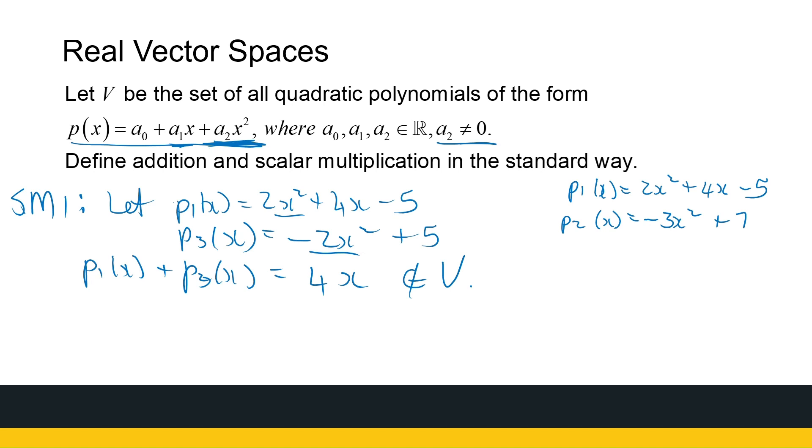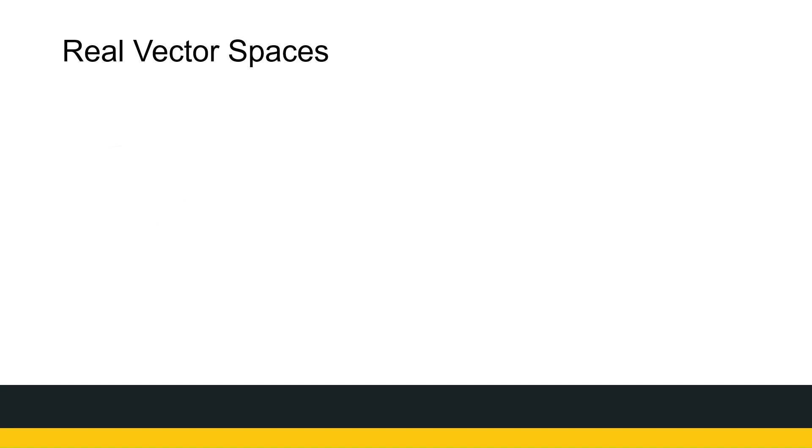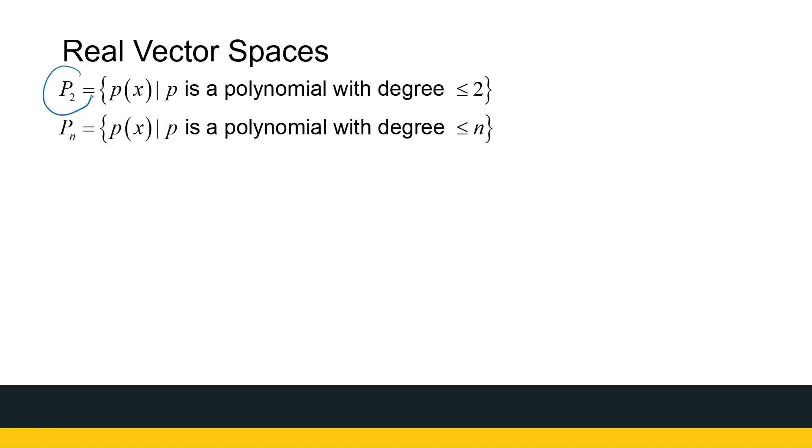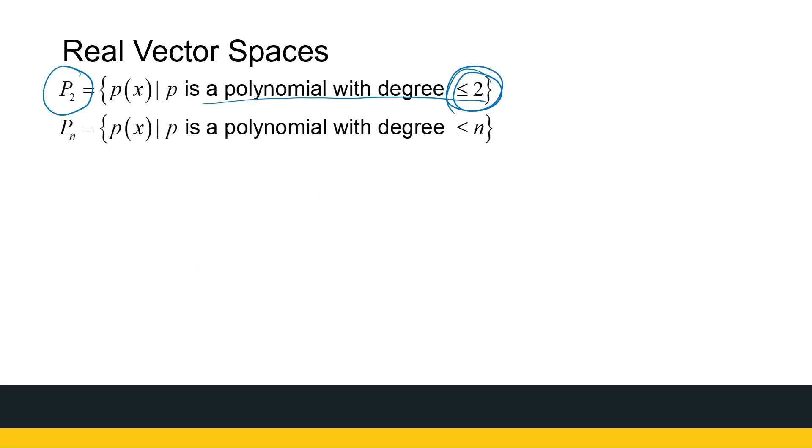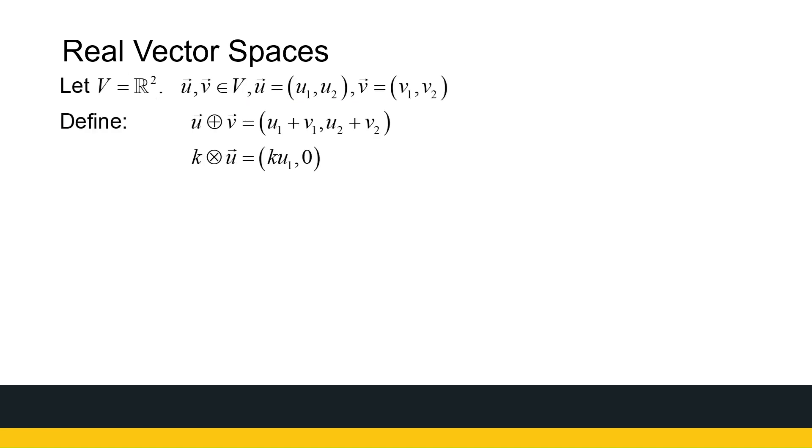Now, when will sets of polynomials be vector spaces? We have to get rid of this occurrence that we had in this case. So what we say, I call the set P2. That's all the polynomials of degree less than or equal to 2. Because if we look at the previous example, you're never going to add two quadratic polynomials and get something with a higher degree. You can get something with a lower degree, but not a higher degree. So in general, Pn is the set of all polynomials with degree less than or equal to n. So this set together with the standard addition and standard multiplication is again a vector space.